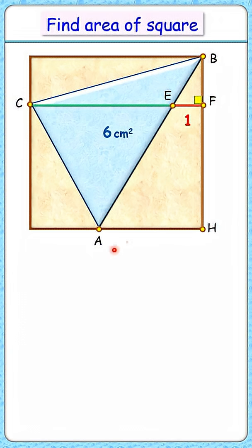Let's assume the side length of the square is a centimeters. The CF length will be a, and the CE length will be a minus 1.